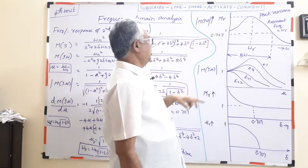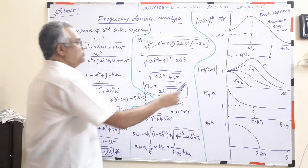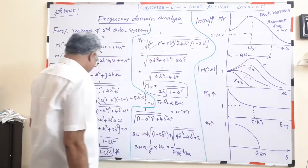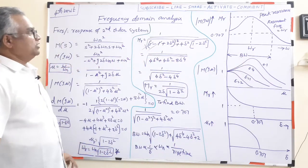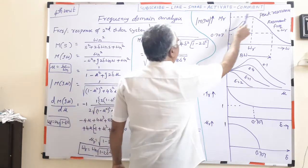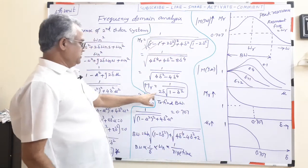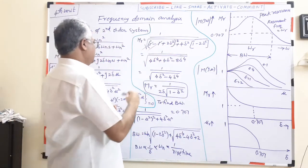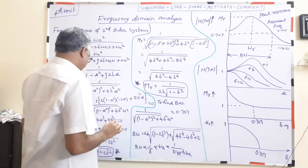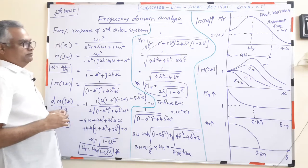From this plot: at ωr the magnitude reaches its maximum, called peak resonance Mr. The resonant frequency ωr is found using the formula ωr = ωn√(1 − 2δ²), and Mr is found using Mr = 1/(2δ√(1 − δ²)). You must remember both these formulas.